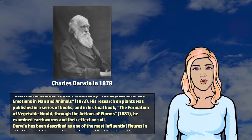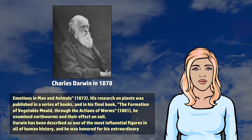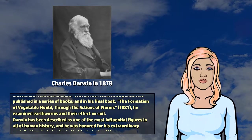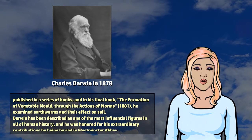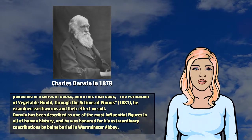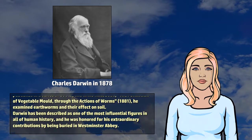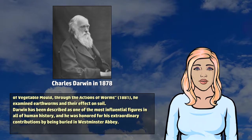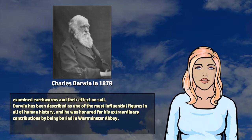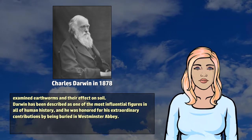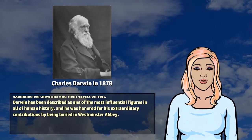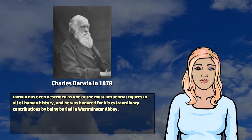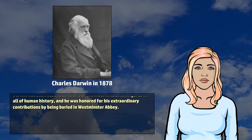His research on plants was published in a series of books, and in his final book, The Formation of Vegetable Mold Through the Actions of Worms, he examined earthworms and their effect on soil. Darwin has been described as one of the most influential figures in all of human history, and he was honored for his extraordinary contributions by being buried in Westminster Abbey.